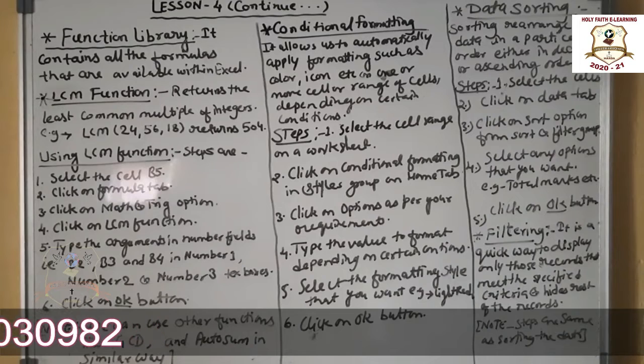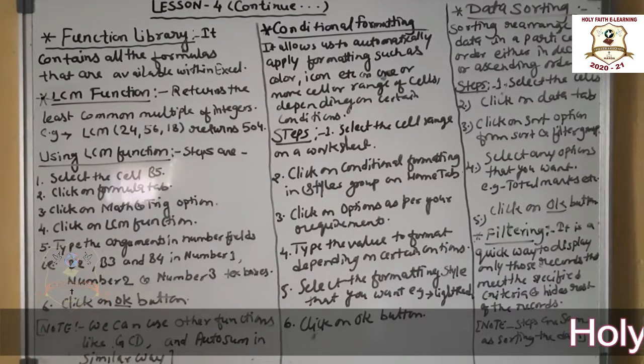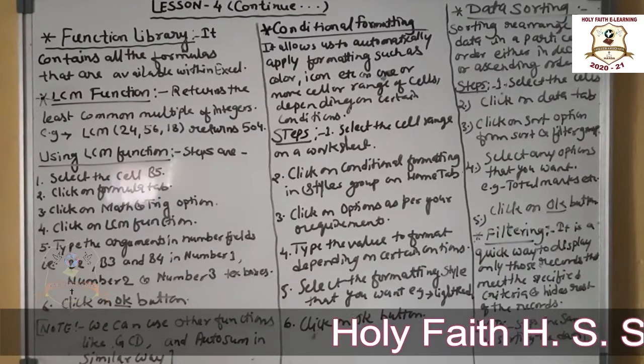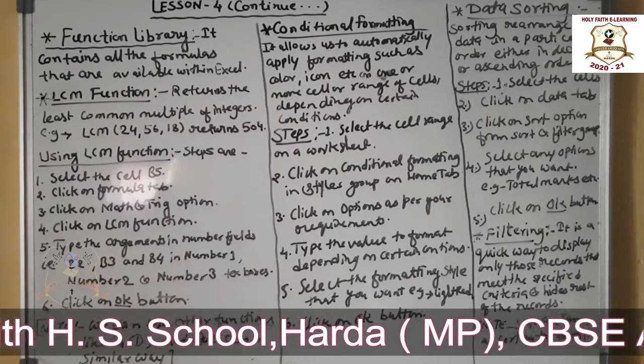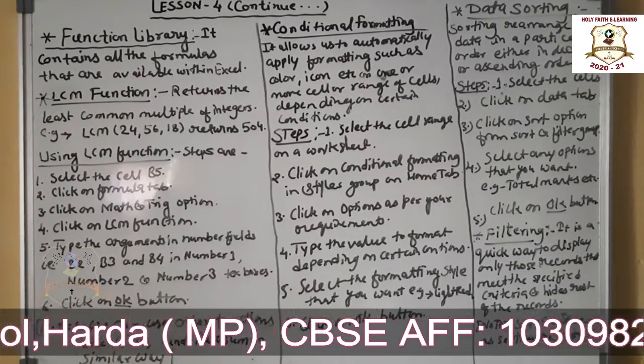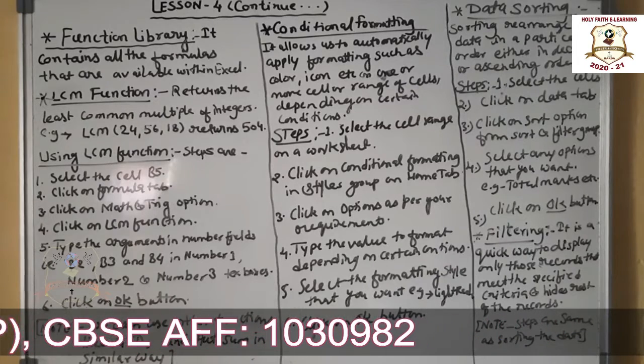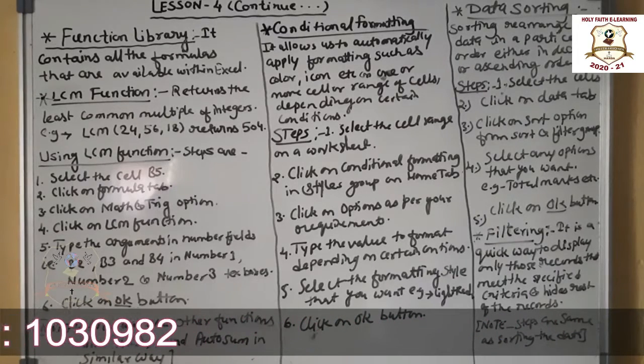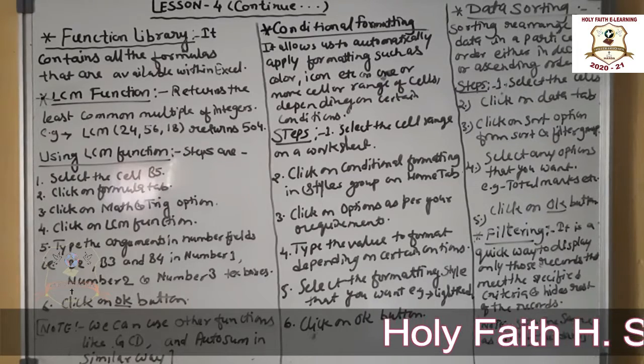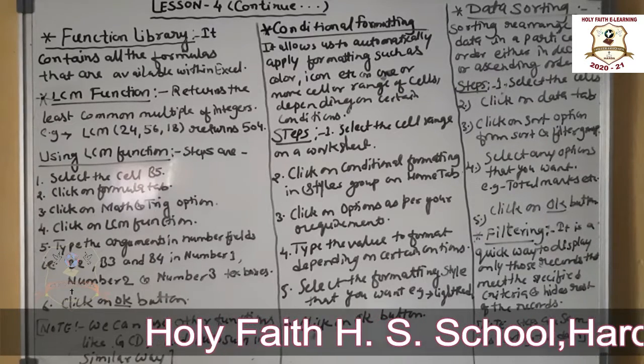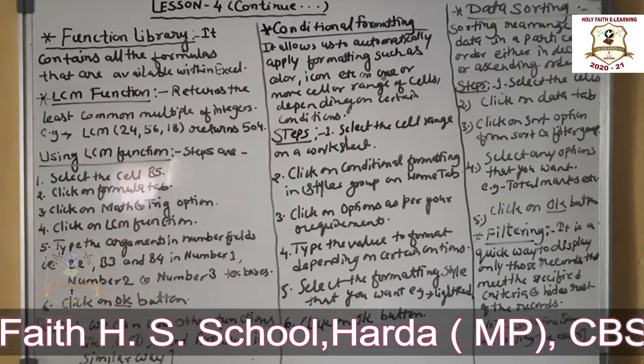If you have data like students' marks on a particular subject, then you can arrange them in ascending or descending order. If you have names of students where Z letter firstly appears and A letter lastly appears, you can arrange systematically A to Z or Z to A as per your requirement with the help of sorting.